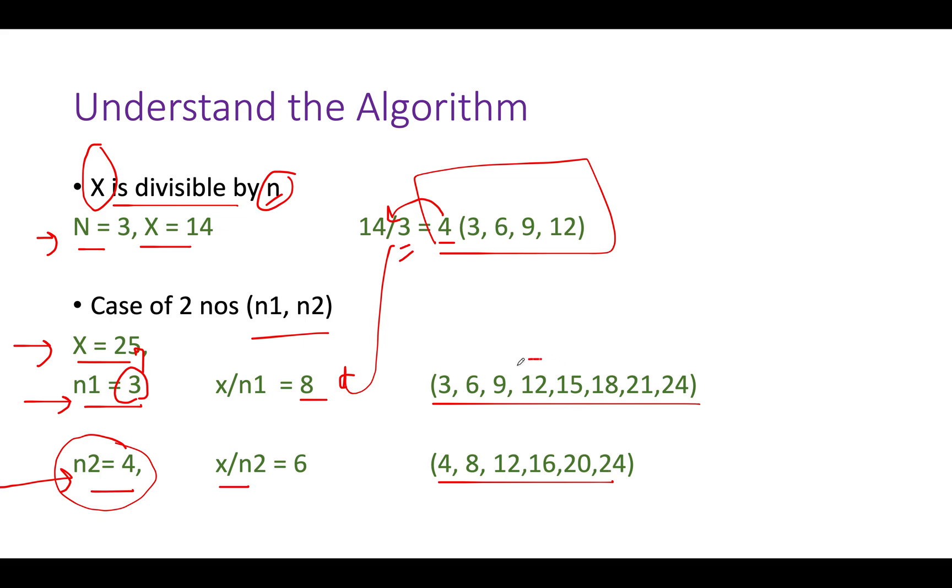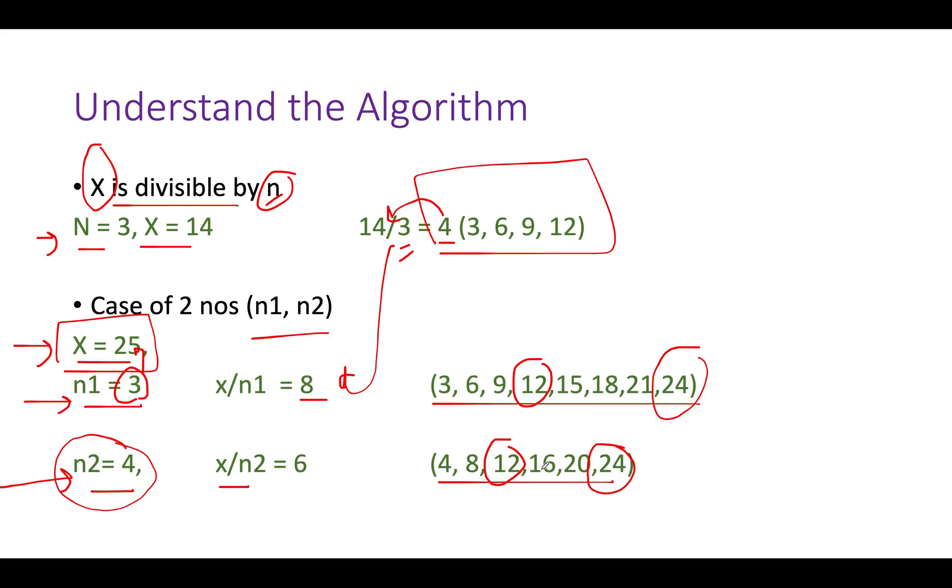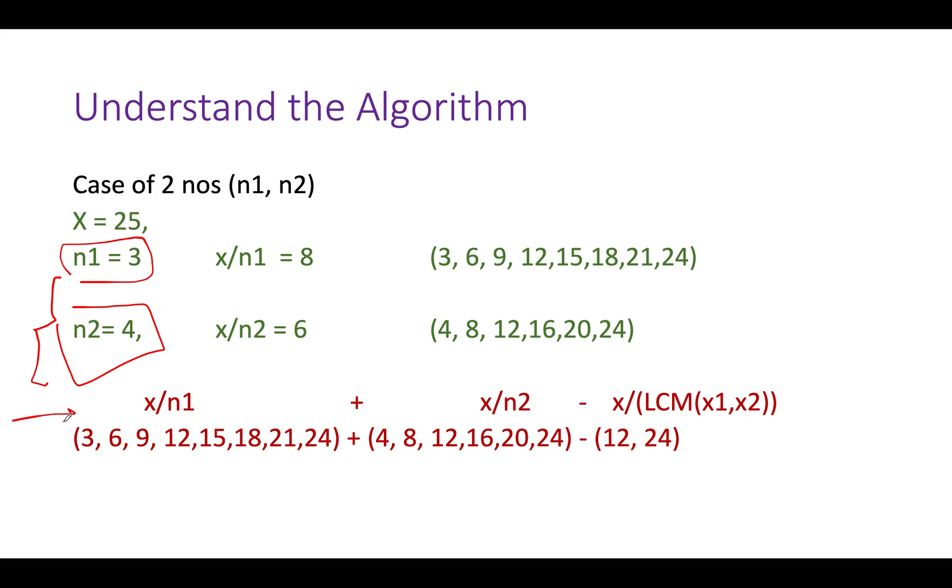However, what do you see? There are few integers that are repeated in both series. The first one is 12, the second one is 24. If I want to generate a common series of all integers that are either divisible by n1 or n2 up till x, what do I do? I find out the LCM of n1 and n2.